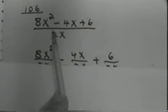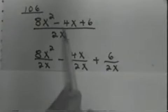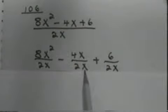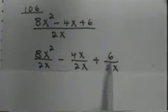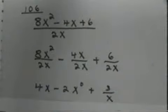So I have 8x squared divided by 2x, the 4x divided by the 2x, and the 6 divided by the 2x. Now we simplify. 2 goes into 8 four times. x squared divided by x is x.